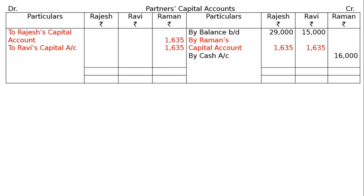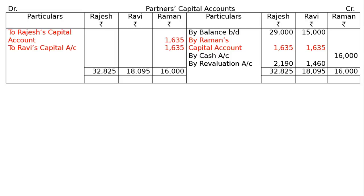Next entry: By Cash Account — Raman is contributing Rs. 16,000; cash of Rs. 2,000 already in the asset side of the balance sheet can be added to this Rs. 16,000. Revaluation profit: Rajesh Rs. 2,190, Ravi Rs. 1,460. Totalling the credit side and carrying down balances: for Ravi, totalling is Rs. 18,095 and the closing balance carried down is Rs. 12,730.